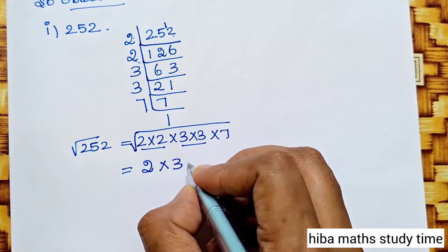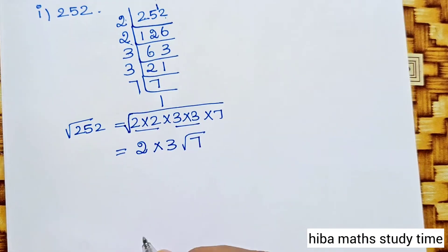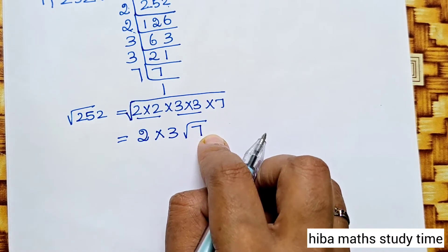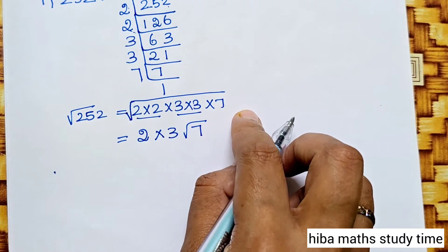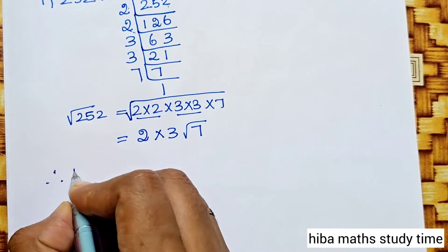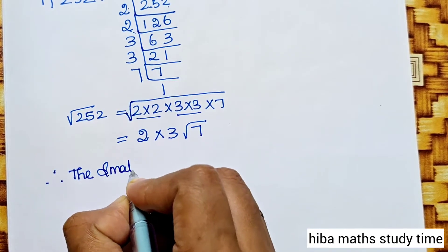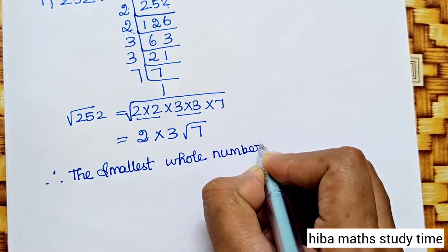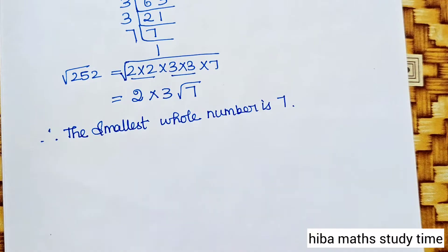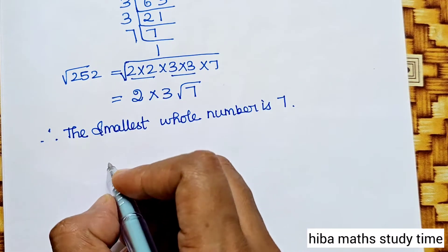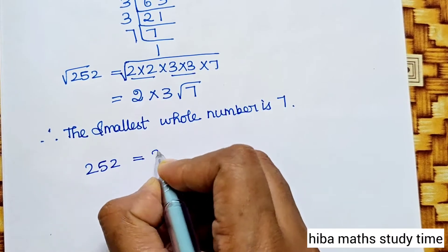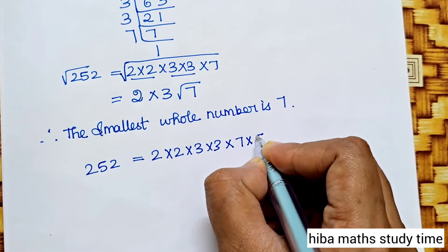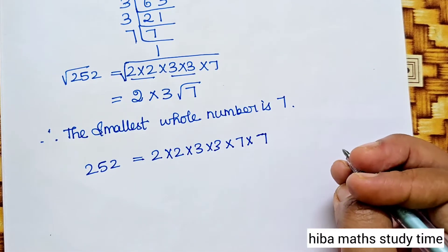But here, 7 is unpaired. So, if we can find the smallest number to multiply, it is 7. This makes 252 a perfect square. Therefore, the smallest whole number is 7.